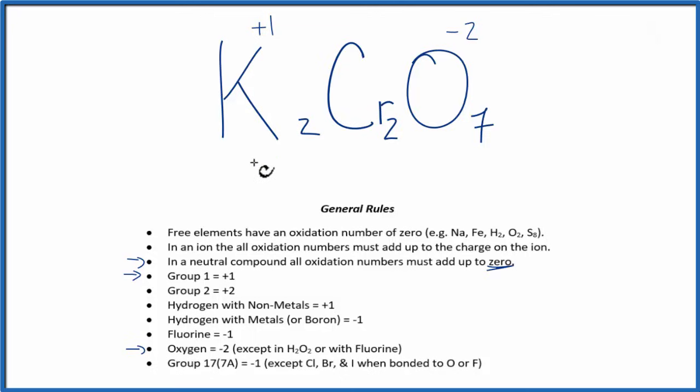We know 2 times plus 1, that's 2. 2 plus, we don't know the chromiums, and then plus 7 times minus 2, that's minus 14. All of that needs to equal this 0 here. So 2 plus 12, that would give us 14. Add the negative 14, we get the 0.